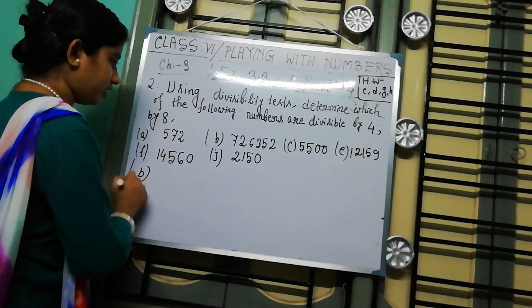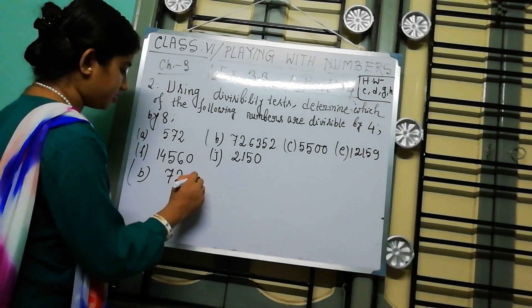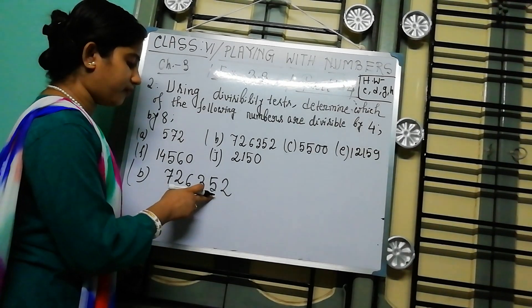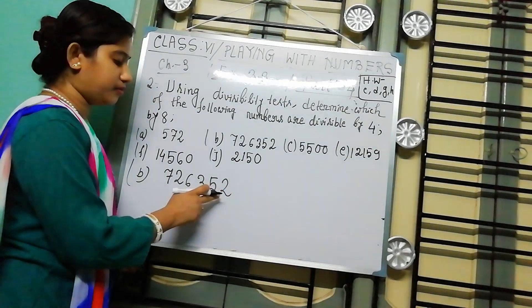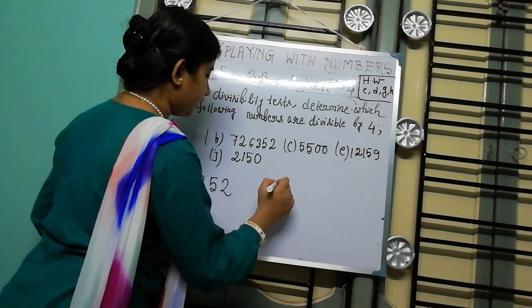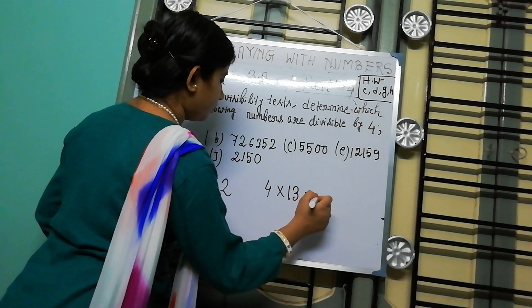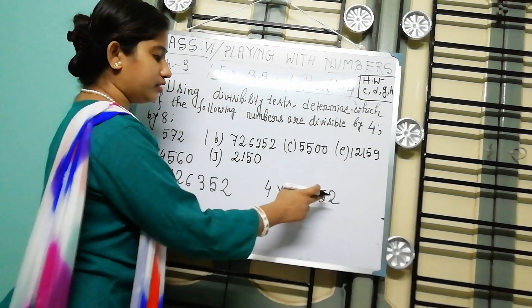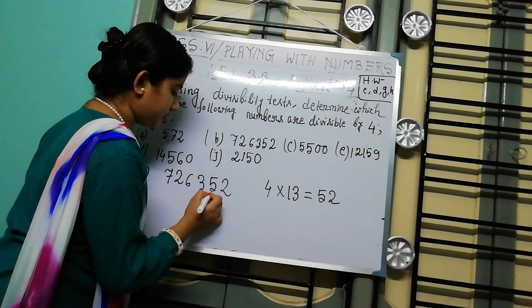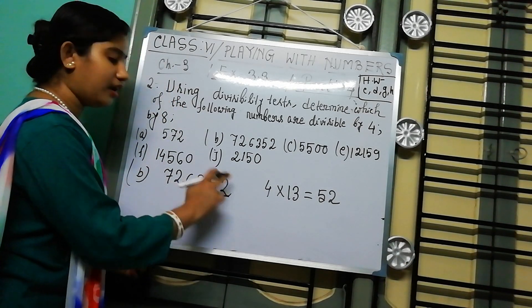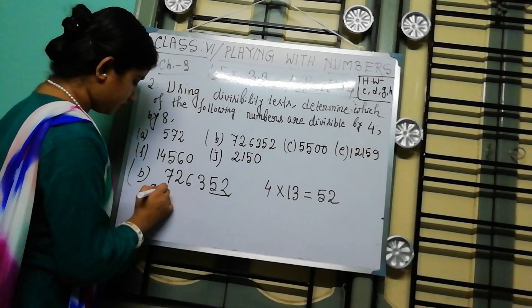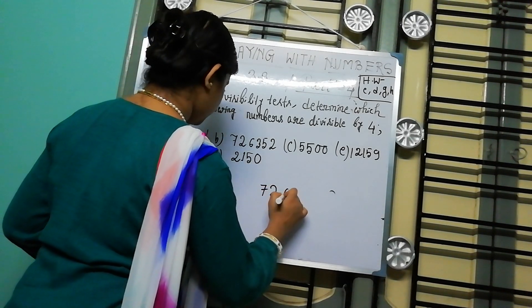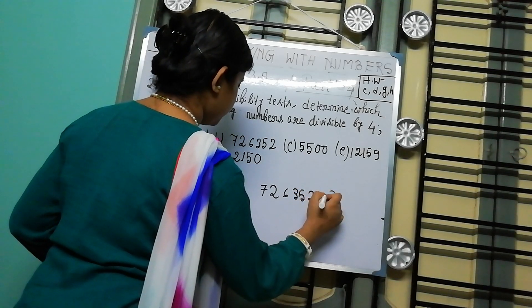Next, number B. The number is 726352 — a 6-digit number. For divisibility by 4, we check the last 2 digits. The last 2 digits are 52. Since 4 × 13 = 52, that means 52 is a multiple of 4, so the last 2 digits are divisible by 4. Therefore 726352 is divisible by 4.